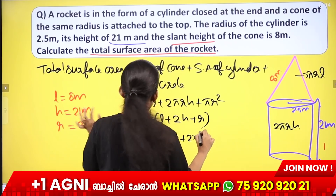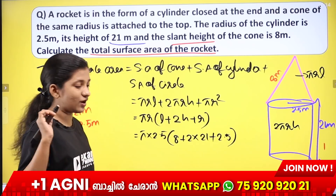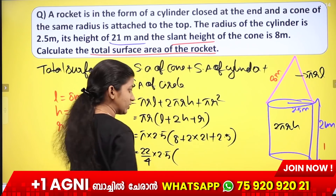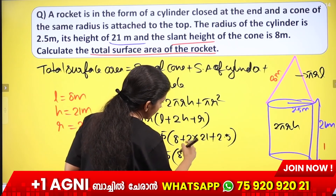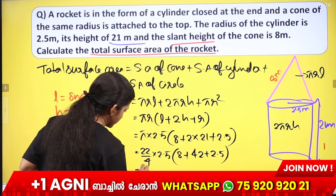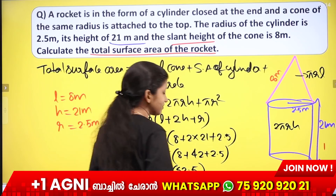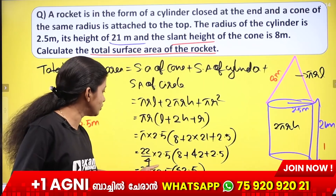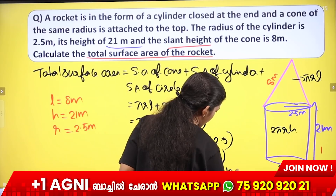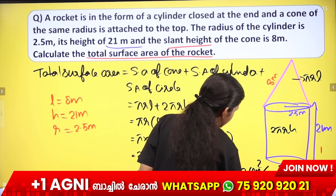Substituting cyclic values: 22/7 × 2.5 in bracket, add 8 plus 2 × 21 = 42, plus 2.5. Then 22/7 × 2.5 × 52.5. The final answer: total surface area is equal to 412.12 cm².